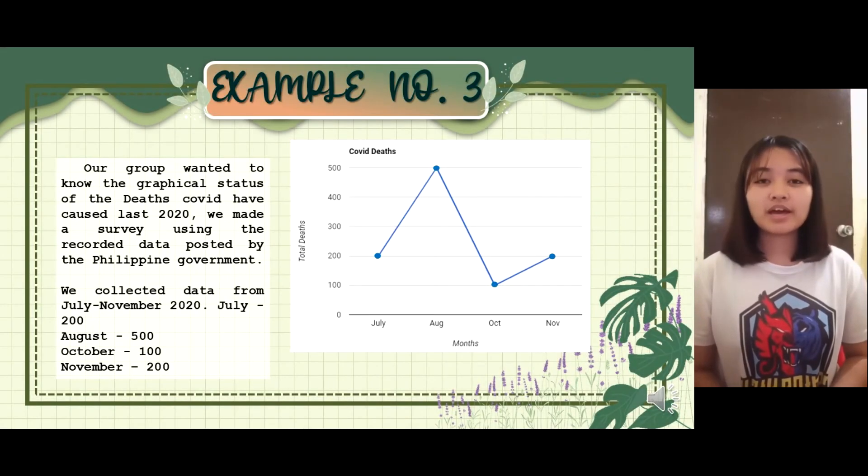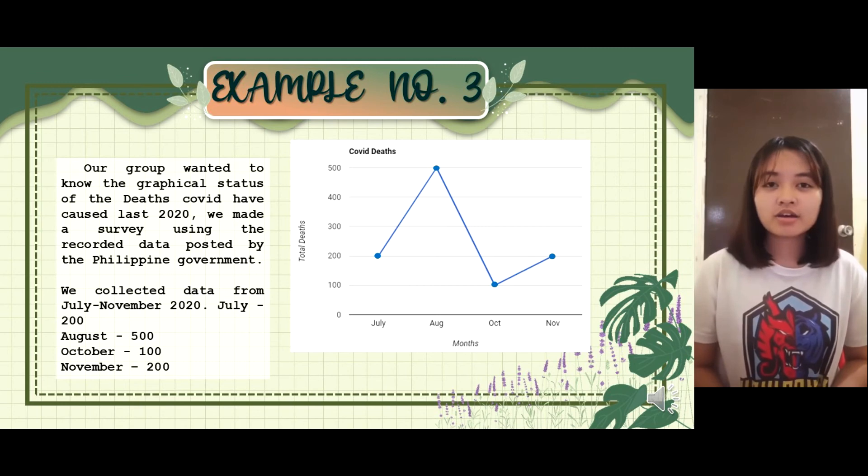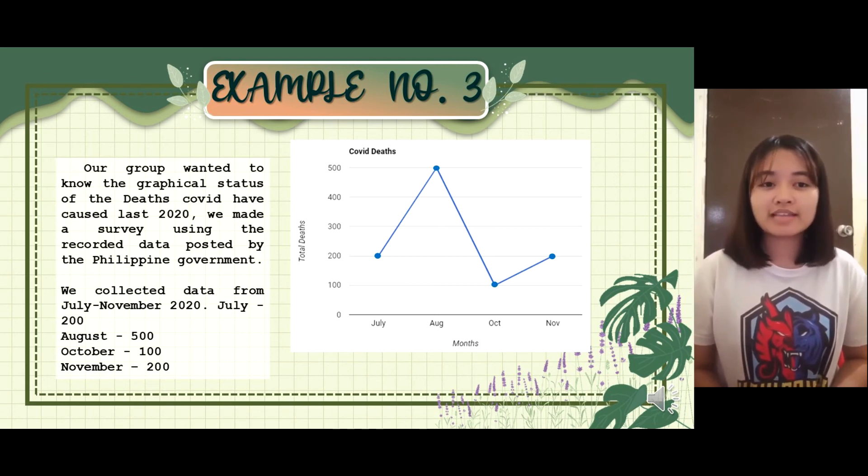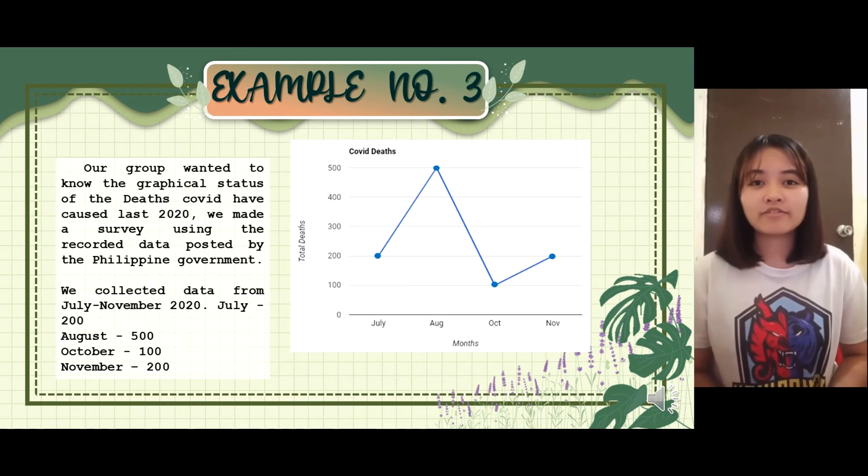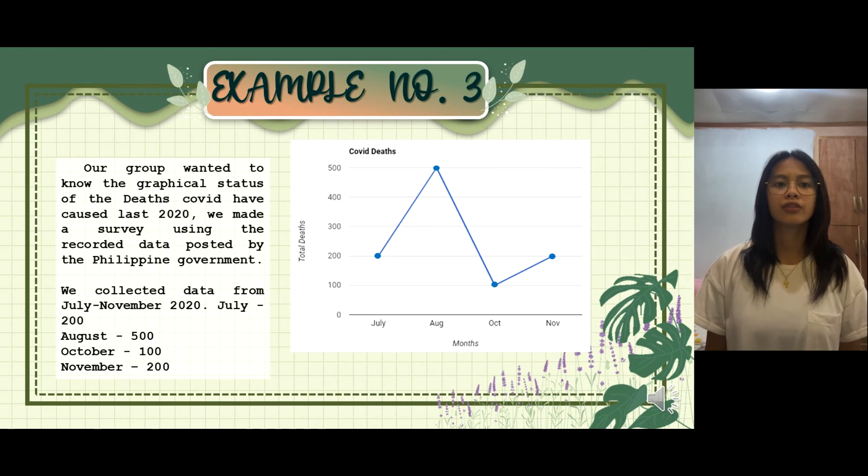For our last example, we have here a graph about the COVID deaths that has happened from 2020 starting from July, August, October, and lastly on November. And we have here our source where you can look at where we have find our data. Our group wanted to know the graphical status of deaths COVID have caused last 2020. We made the survey using the recorded data posted by the Philippine government. We've collected data from July to November 2020.